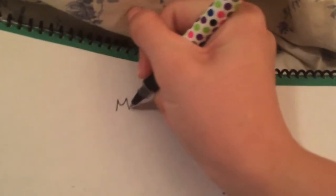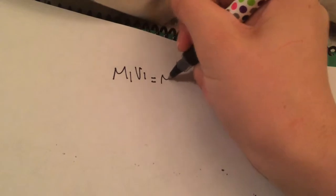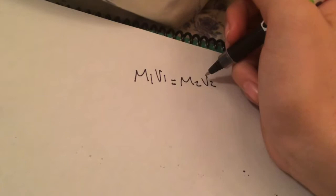The formula we are going to use is M1 times V1 equals M2 times V2. We're going to use that because it's a liquid solute.